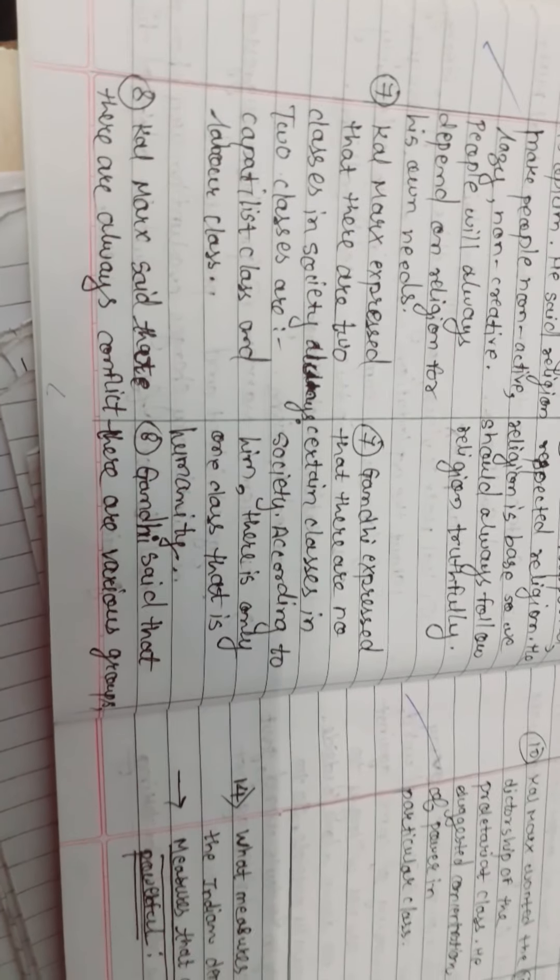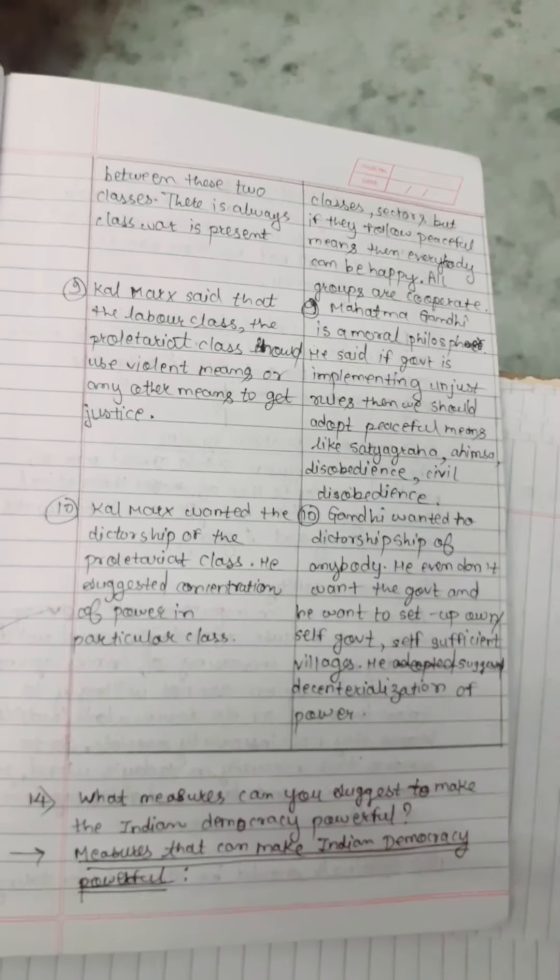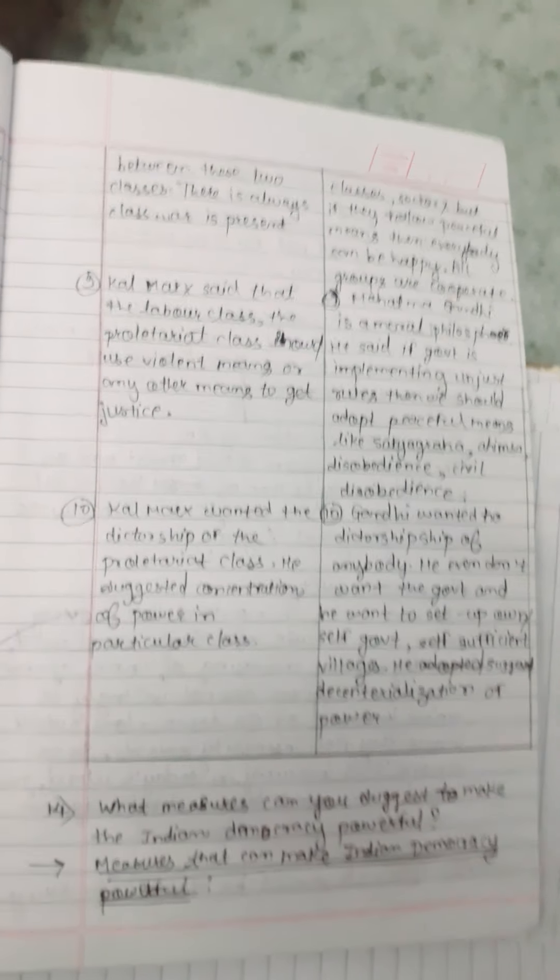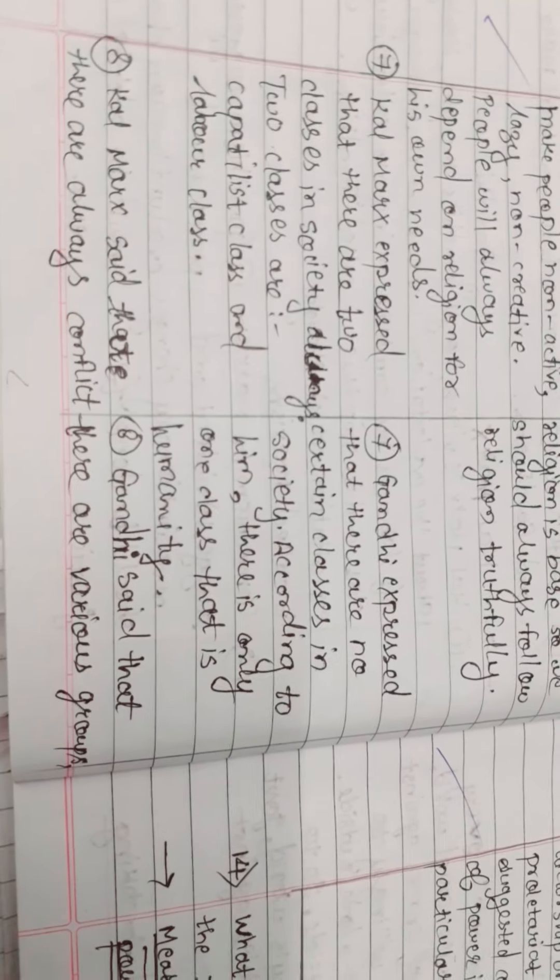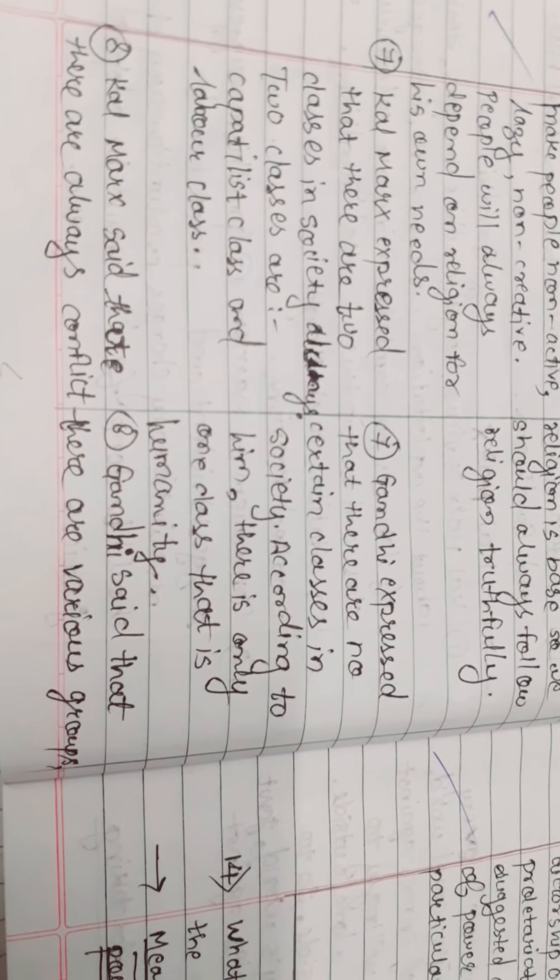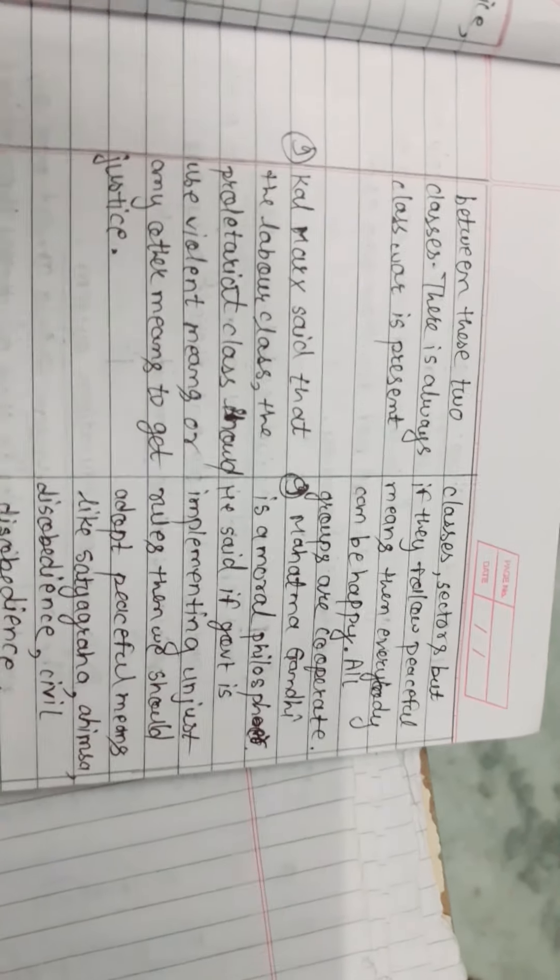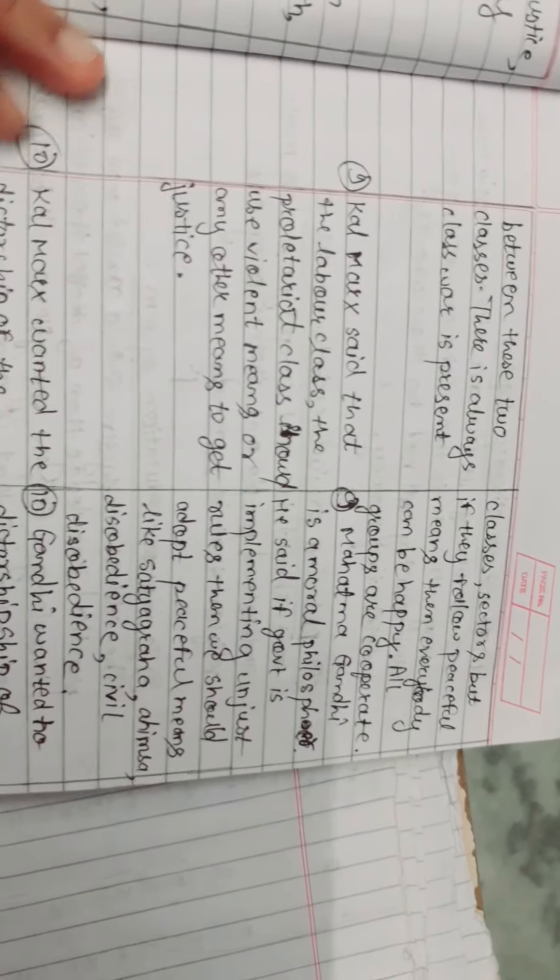Karl Marx said that there is always conflict between these two classes and there is a class war present. Gandhi said that there are various groups, classes, and sectors, but if they follow peaceful means, then everybody can be happy. All groups can cooperate.